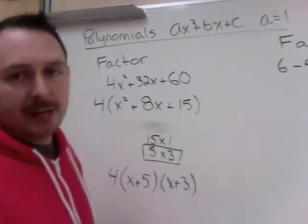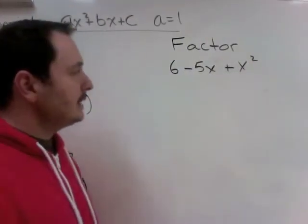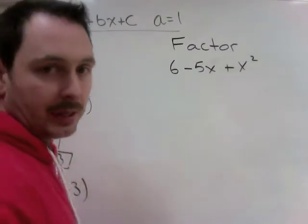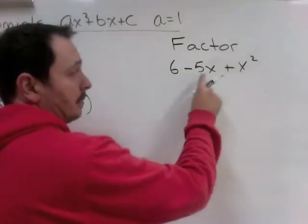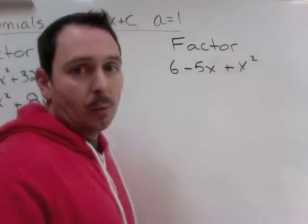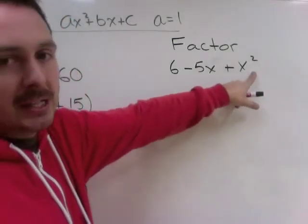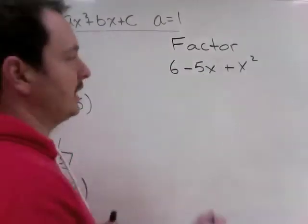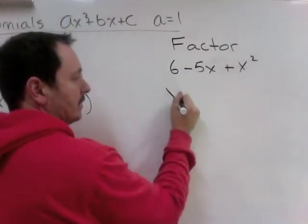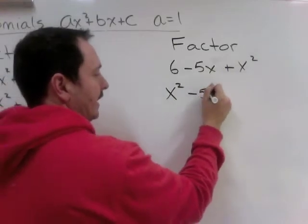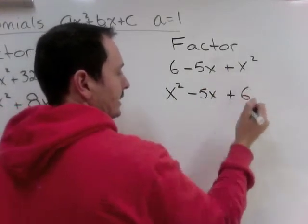And a second way they might try and trick you up is they might put it in a different order than you're used to. So, here we have a 6, a minus 5x, and an x squared. We like to see the biggest letter variables first. So, x squared, then the x's, then the numbers. So, rewriting this is x squared, then minus 5x plus 6.